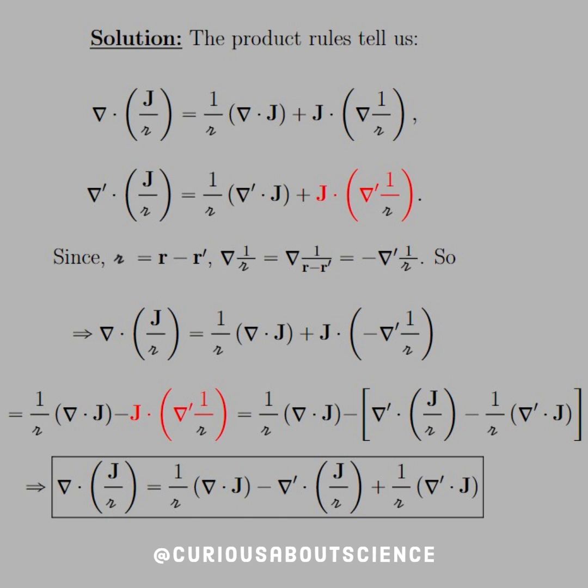So, the product rule tells us that we have the divergence of J over script R is equal to 1 over R. Keep that alone, product rule. Then we have divergence of J. Now, we leave J alone, take the divergence of, or dot that with the gradient of 1 over script R. Similarly here, if we do the same thing with a prime coordinate, we just put the primes accordingly, but now we'll color code one of them red. The reason why is because we'll have to substitute that in later.